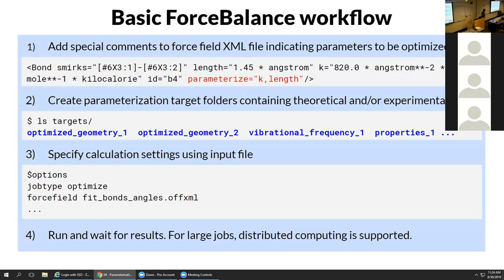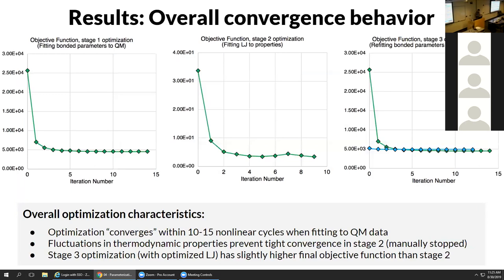The basic workflow of using ForceBalance is: first set the parameters you want to optimize in the force field file, set up target folders containing the data you want the force field fitted to, create an input file specifying calculation settings, then run and wait for results. The optimization was run in three main stages, and here is the convergence behavior. In the first stage, we fit to only QM properties. Most of the decrease in the objective function happens in the first iteration, and by the fifth iteration things are only changing by one or two percent, with convergence criteria met by around the 14th iteration.